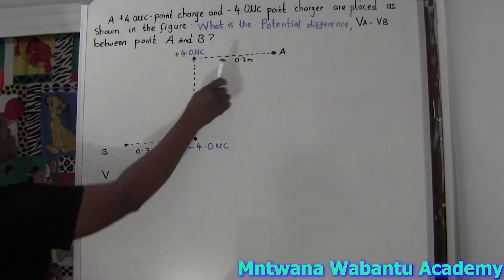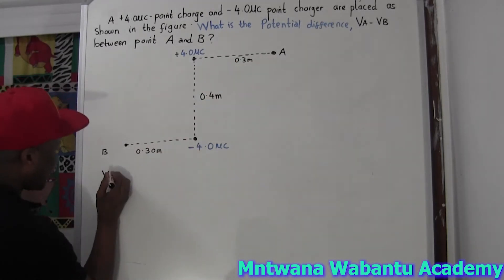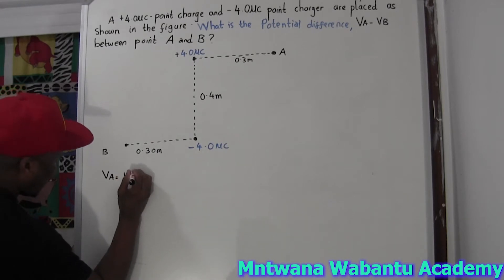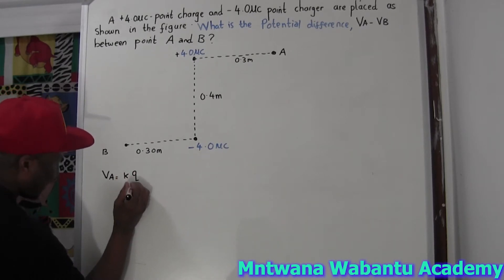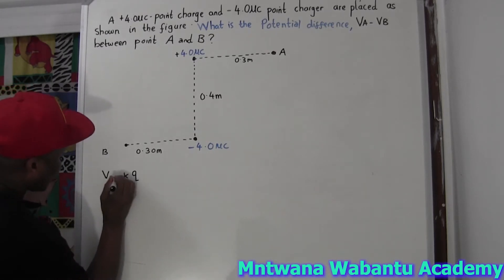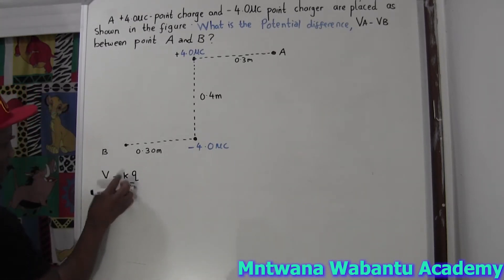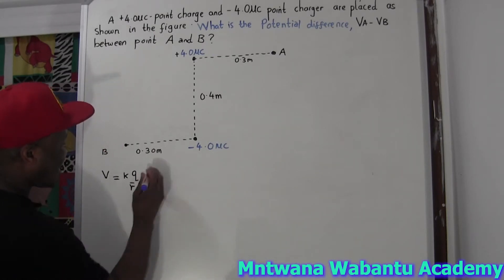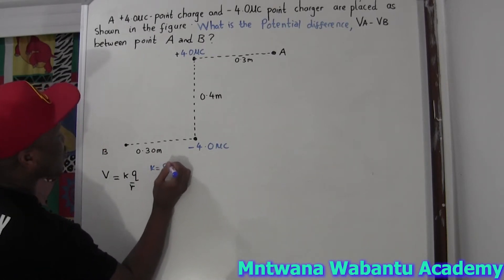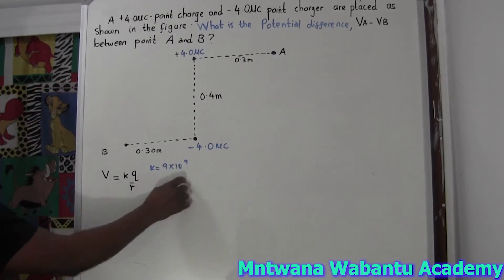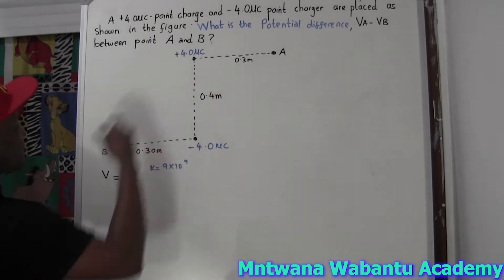VA minus VB is the potential difference. For a charge, you say k times charge over distance. The potential difference equals k, which is the constant — k is always 9 times 10 to the power 9. That constant is always given. Now let's start and get VA.